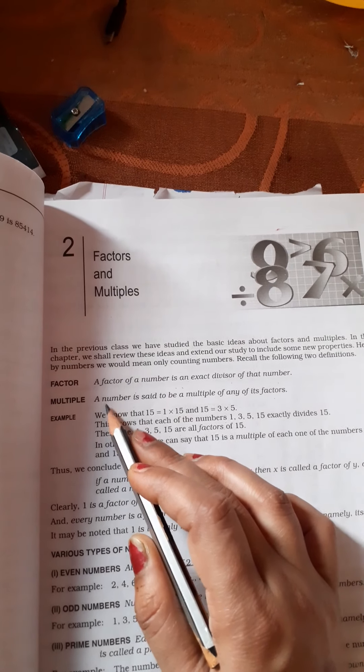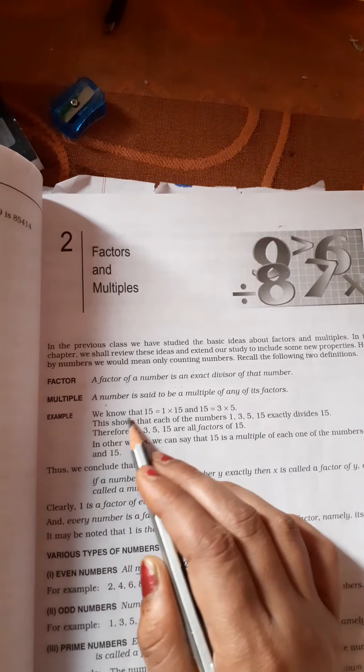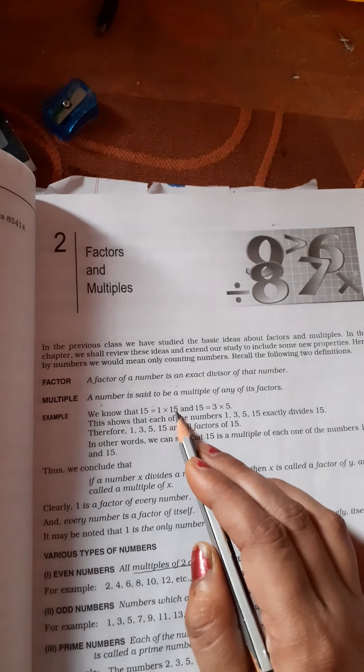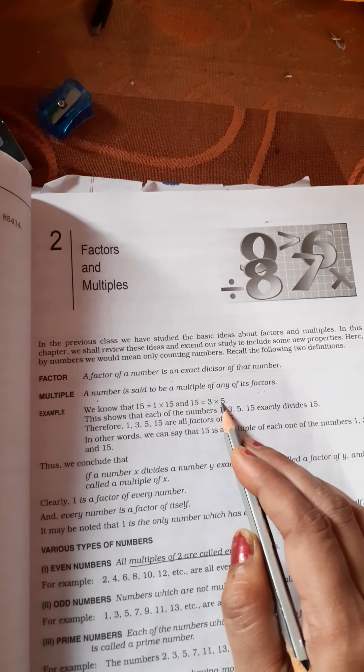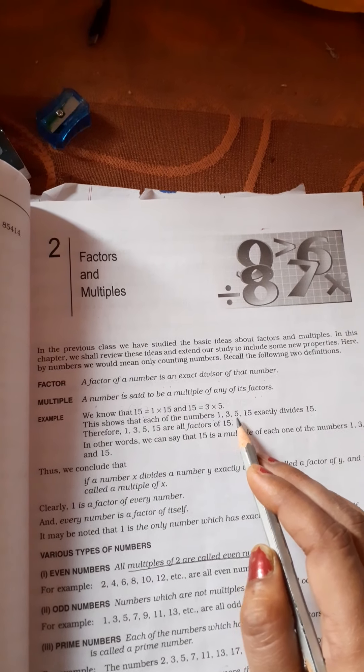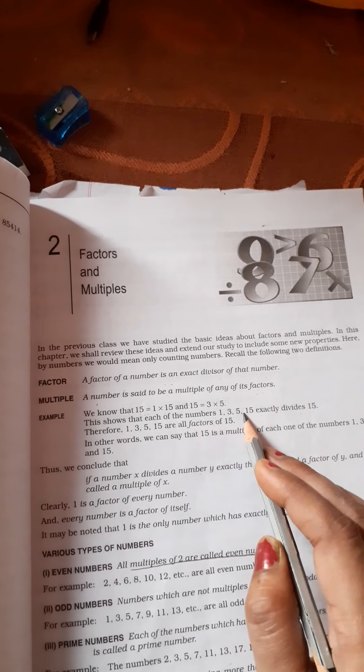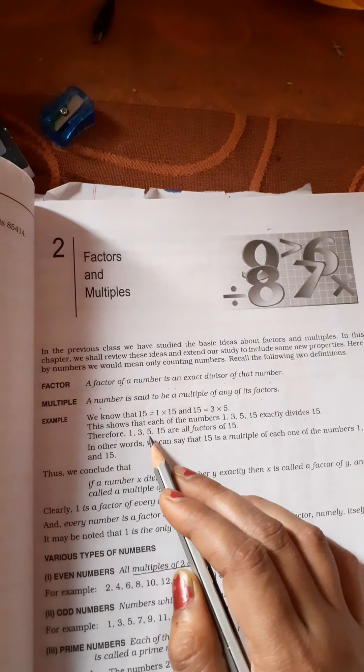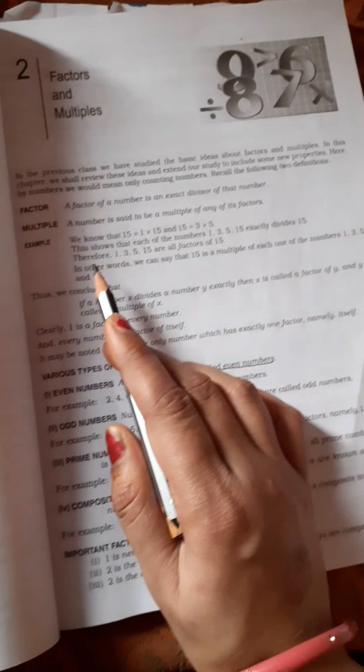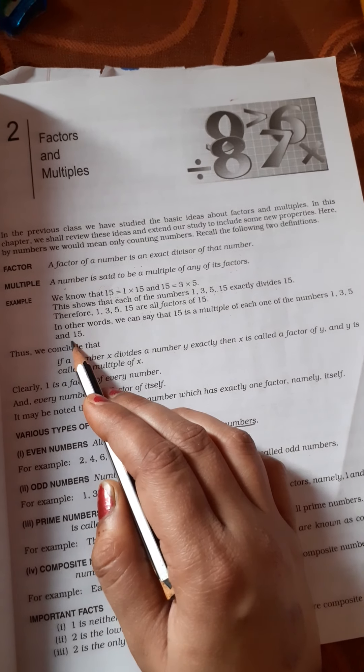A number is said to be a multiple of any of its factors. For example, if a number is 15, you can write it as 1 into 15, answer 15, or 3 into 5. This shows that each of the numbers 1, 3, 5, and 15 exactly divides 15. So 1, 3, 5, and 15 are all factors of 15. In other words, we can say that 15 is a multiple of each one of its factors: 1, 3, 5 and 15.